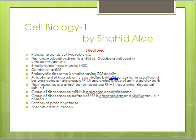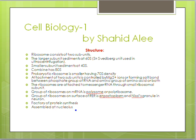Ribosomes are held together with the help of magnesium ions. Ribosomes are attached to messenger RNA through the small ribosomal subunit first, then the large subunit joins during translation. A group of ribosomes on messenger RNA is called a polysome or polyribosome. A group of ribosomes on the surface of rough ER is called ergastoplasm, which is considered the factory of protein synthesis.